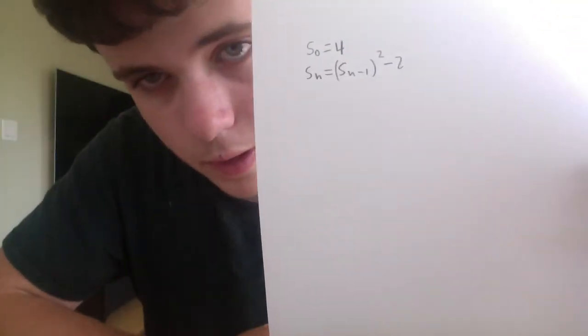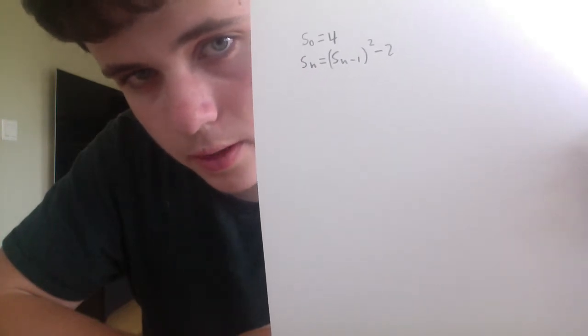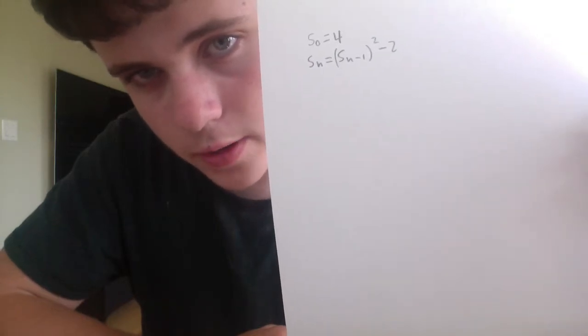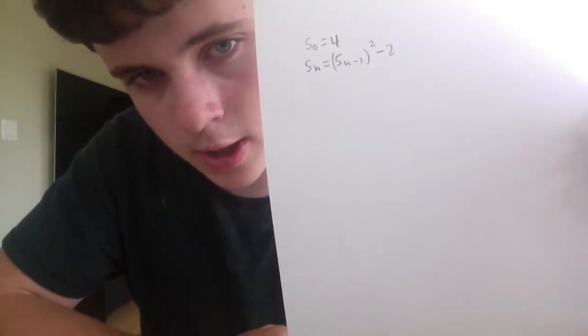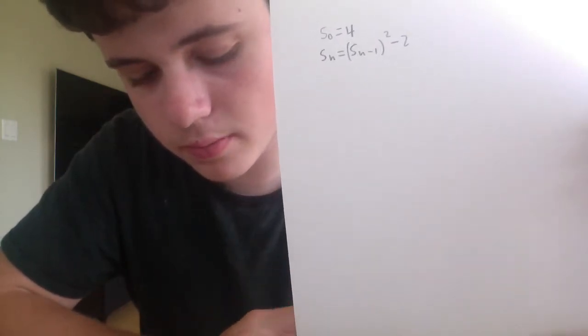So let me explain how the test works. You basically have a recursive sequence. S0 is equal to 4 — that means the 0th term in the sequence is 4. To find the next term, you square the 0th term and subtract 2. That will give you S1, the first term. Then to find the next term after that, you square that and subtract 2 again. So using this, if you wanted to find S100, you would build up from S0, S1, S2, and so on.